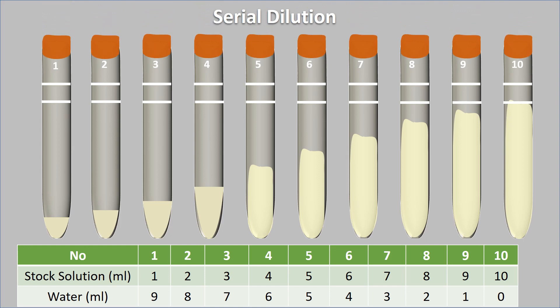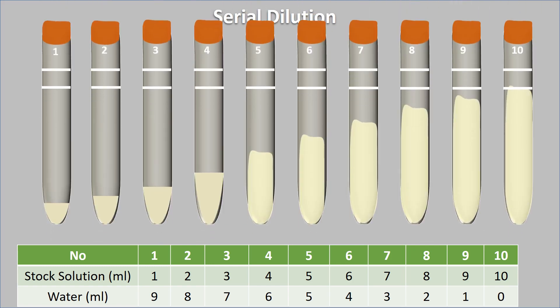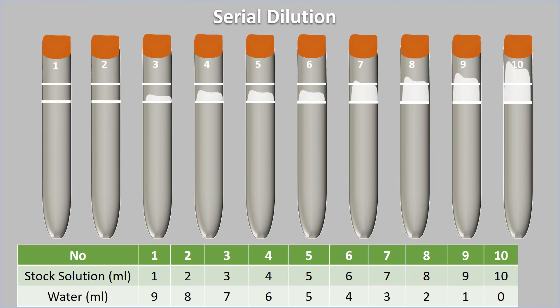Stopper these test tubes and oscillate them in the lengthwise direction in order to generate foam. This oscillation should be done for 15 seconds at approximately 2 shakes per second. Once oscillated, allow the test tubes to stand for at least 30 minutes and after half an hour record the foam height.